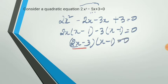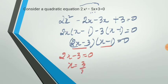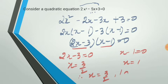If the product of two terms is zero, then one of them must be zero. Either 2x - 3 = 0, which gives x = 3/2, or x - 1 = 0, which gives x = 1. Therefore, x = 3/2 and x = 1 are the roots of the quadratic equation.